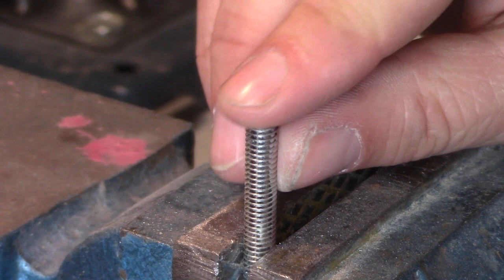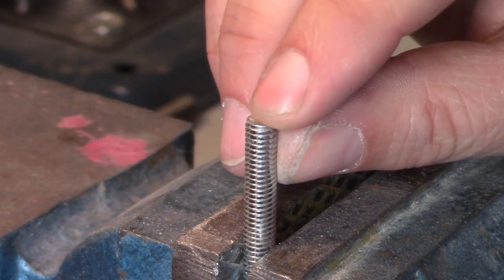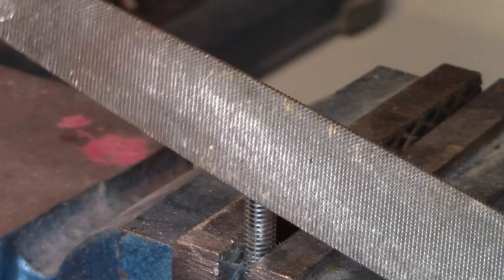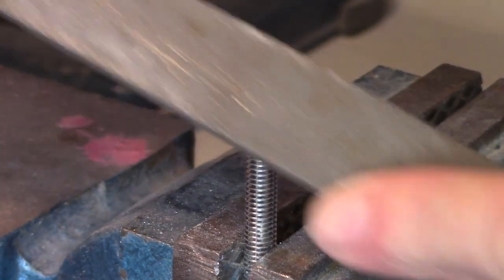Now that we've cut them all, they all have little burrs and sharp edges on them, so we'll take a flat steel file and just take off those burrs.